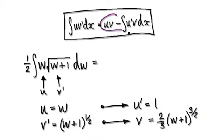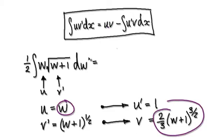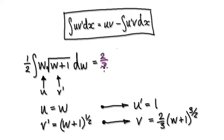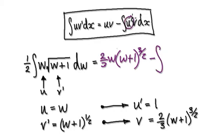So now blindly follow this bit here. So it's saying, get u times v. That would be 2 over 3 times w, and then you've got w plus 1 to the 3 over 2. And then you've got your minus here. Minus the integral of, it's saying, get u prime times v.